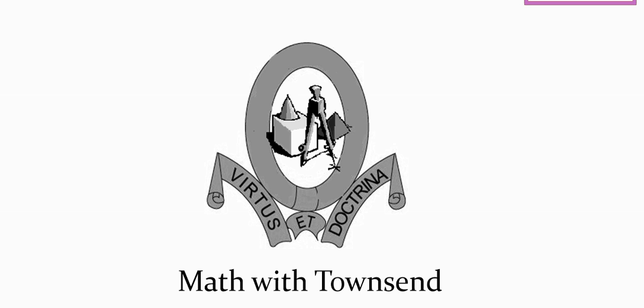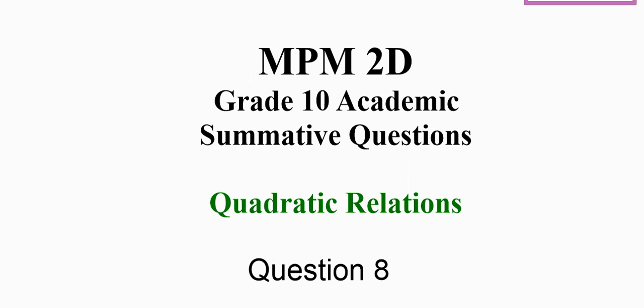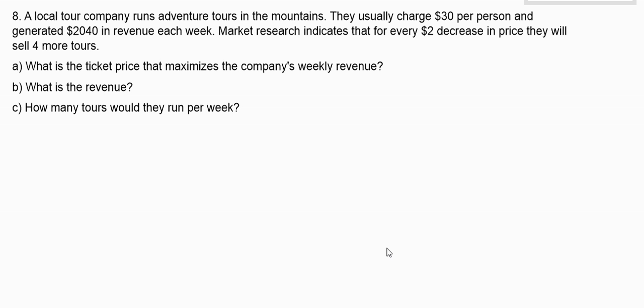Hi there. My name is Miss Townsend and I love math. Welcome to Math with Townsend. This video is for grade 10 students who are working on the year-end summative and it's question number 8 from the summative package. The question says a local tour company runs adventure tours in the mountains. They usually charge $30 per person and generate $2,040 in revenue each week. Market research indicates that for every $2 decrease in price, they will sell 4 more tours.